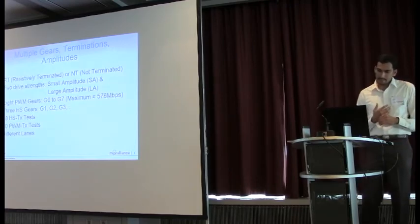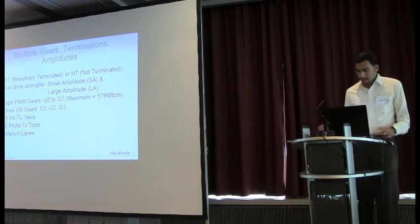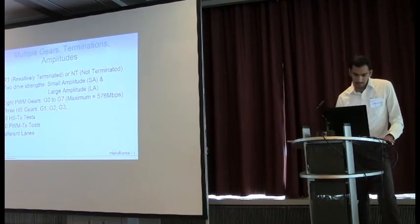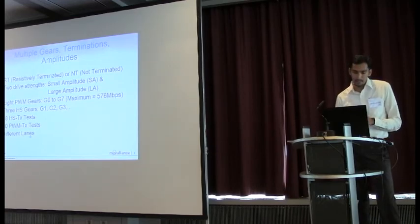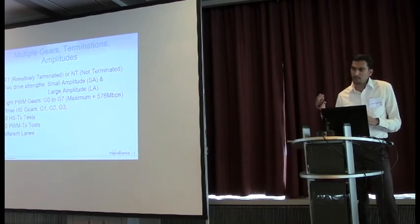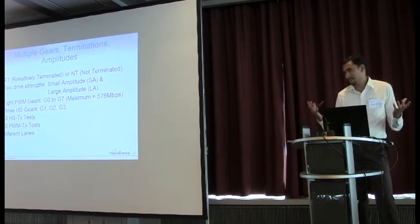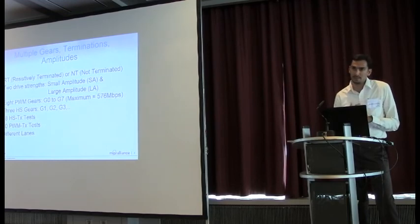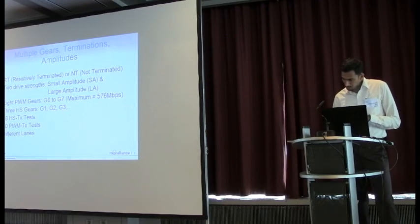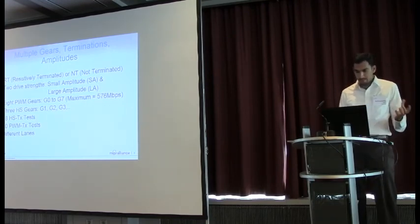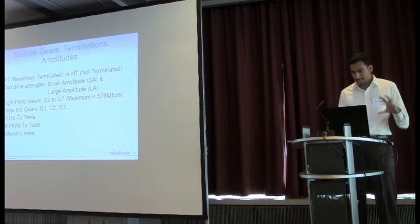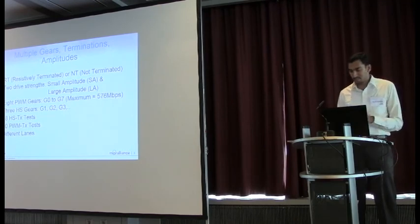So this slide essentially lists the same thing but if you just see the last bullet item it says different lanes. The many combinations which we spoke of was for just one lane. If you add more than one lane into this, simply the number of combinations you need to test for becomes double. So we see this also as a challenge and I think there is a need for a slightly automated solution which will just make things easier for testing.